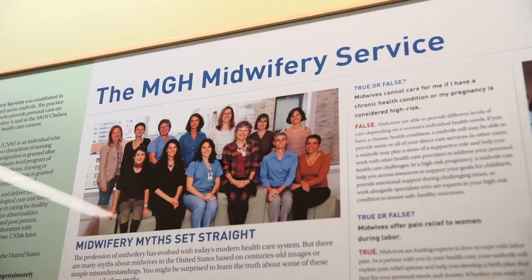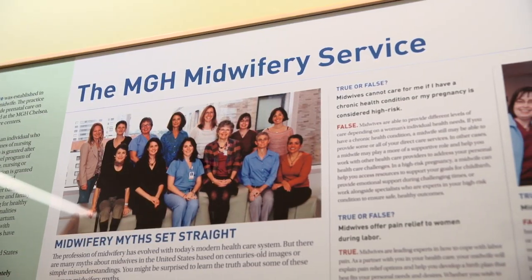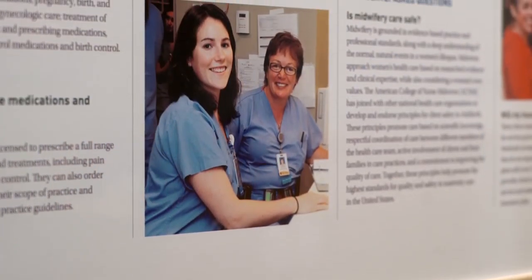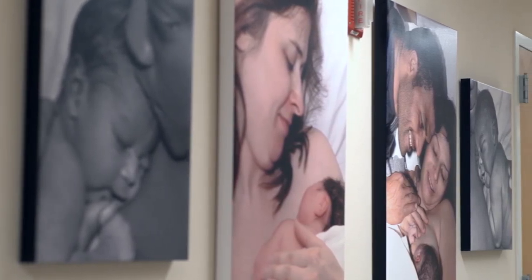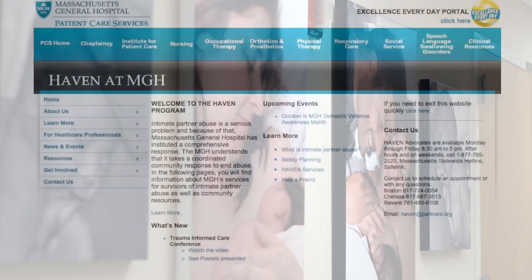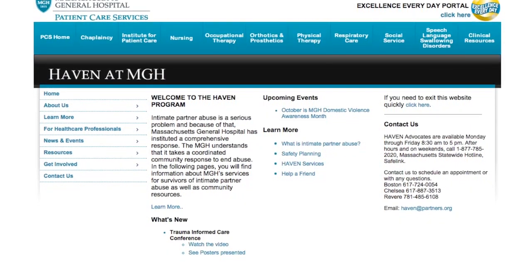I tried to explain to her that accessing domestic violence services, accessing the Haven program, was not the same as going to the police or involving the legal system, and that we would really work with her on what she was comfortable with and what she was ready to do. In the end, she did actually work with one of our Haven advocates, especially working on financial independence and housing stability for her and her children.